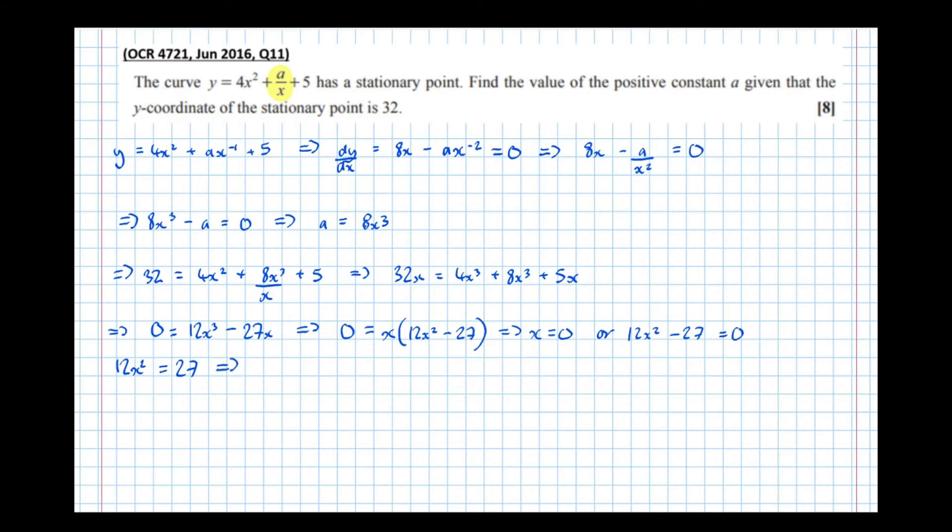Simplifying, dividing both sides by 3, I get 4x² = 9, which means that x² = 9/4. Therefore x = ±3/2.